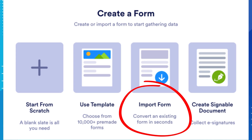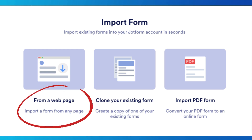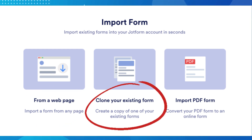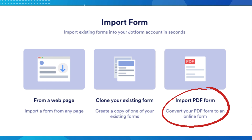The last option is to import a form. There are three ways that you can import an existing form into JotForm: you can pull a form from a webpage, clone one of your existing forms, or convert a PDF form that you have on file.